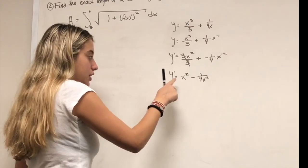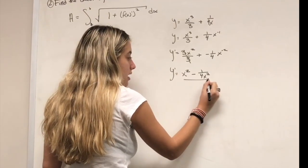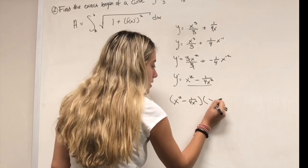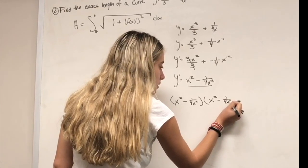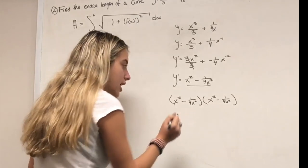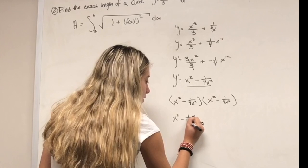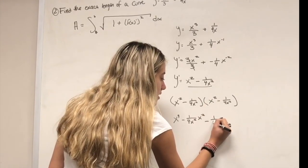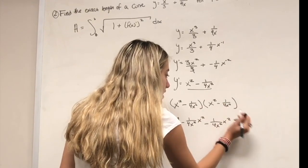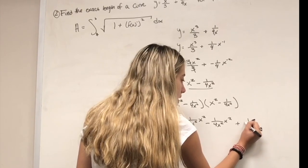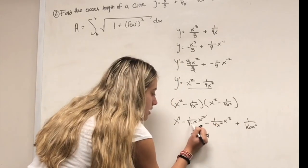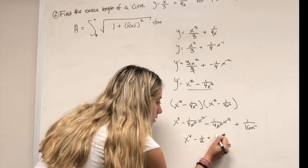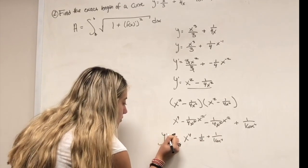Now square the derivative using FOIL: (x² − 1/(4x²))² = x⁴ − 2·(1/(4x²))·x² + 1/(16x⁴) = x⁴ − 1/2 + 1/(16x⁴). The two middle cross-terms cancel, leaving −1/(4x²)·x² − 1/(4x²)·x² = −1/2.